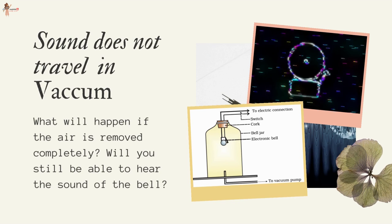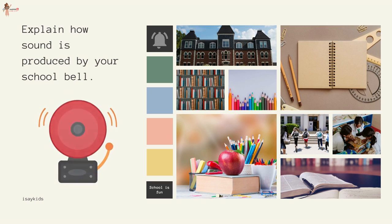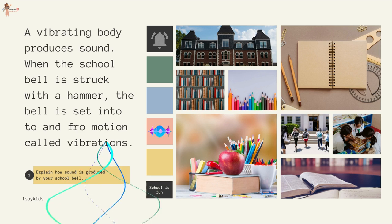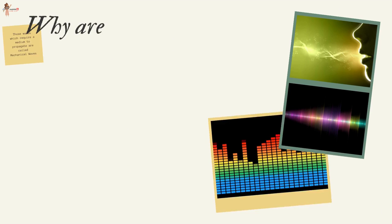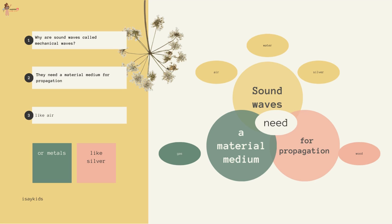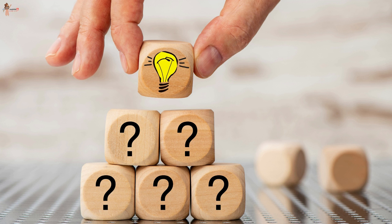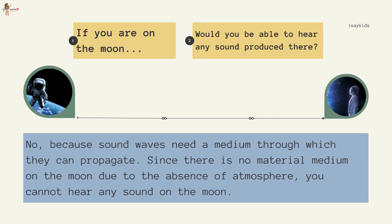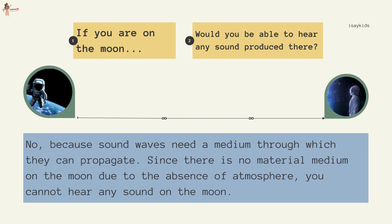When the school bell is struck with a hammer, the bell is set into to-and-fro motion called vibrations, and a vibrating body produces sound. Sound waves are called mechanical waves because they need a material medium for propagation, like air, liquids like water, or metals like silver. Suppose you and your friend are on the moon — you will not be able to hear any sound produced by your friend, because sound waves need a medium to propagate. Since there is no material medium on the moon due to the absence of atmosphere, you cannot hear any sound on the moon.